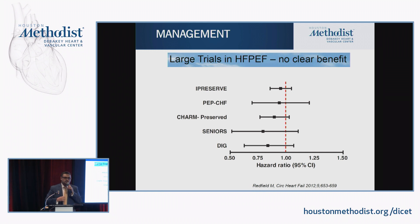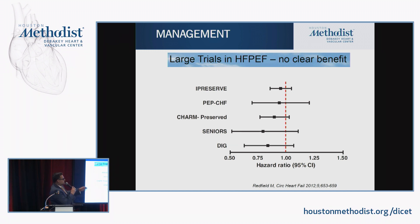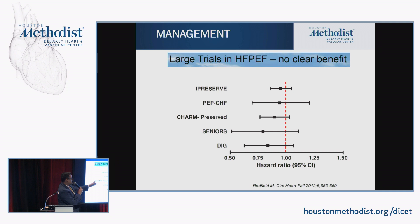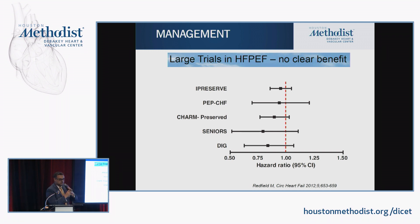I'm going to go over some treatment options. This is a meta-analysis of all the large trials in HFpEF. I-PRESERVE tested irbesartan, an angiotensin receptor blocker. PEP-CHF tested perindopril, an ACE inhibitor. CHARM-Preserved was another ARB trial. The SENIORS trial looked at nebivolol, a beta blocker, and the ancillary arm of the DIG trial was also included. As this meta-analysis shows, there is no pooled benefit from any of these agents.